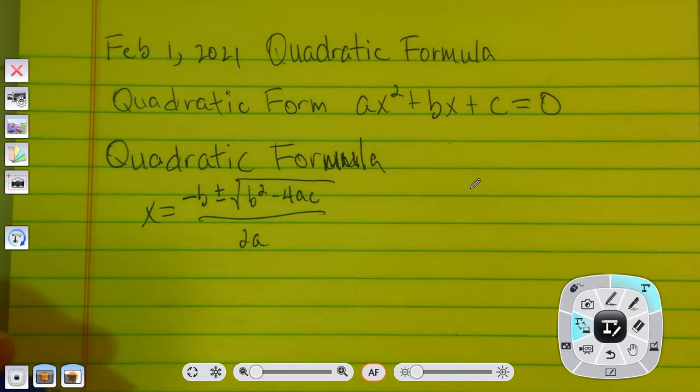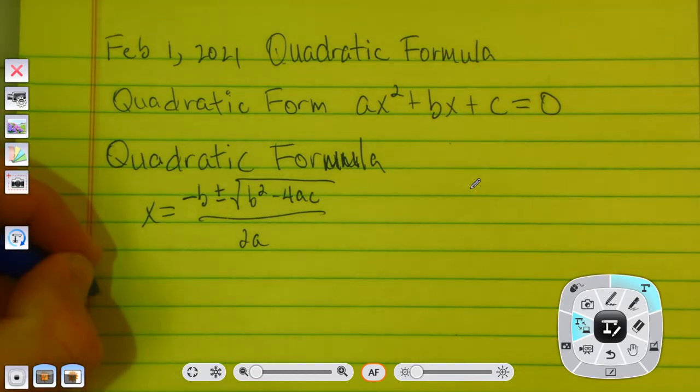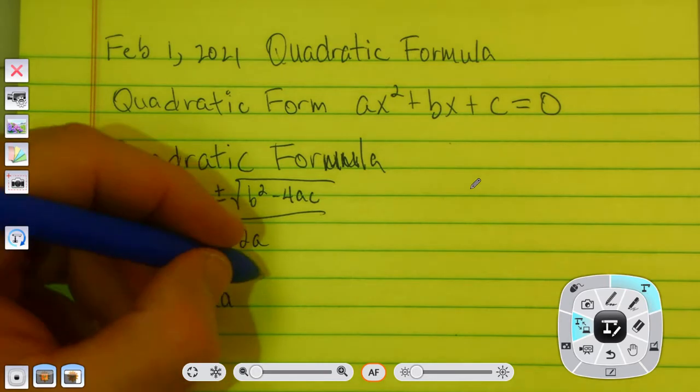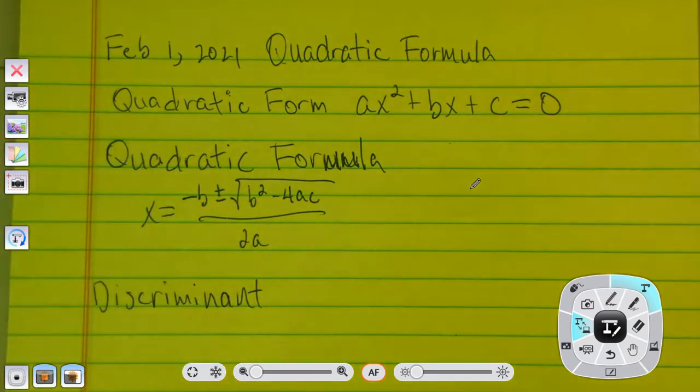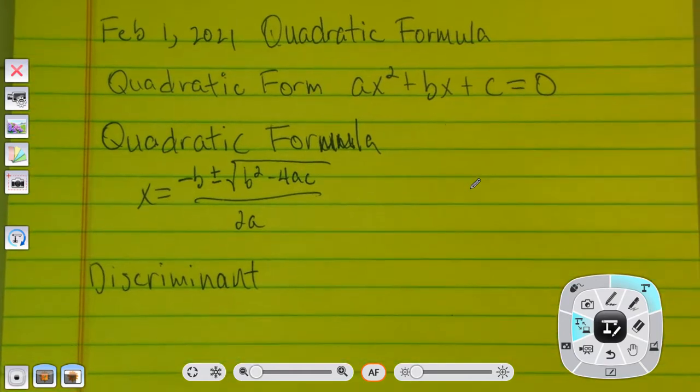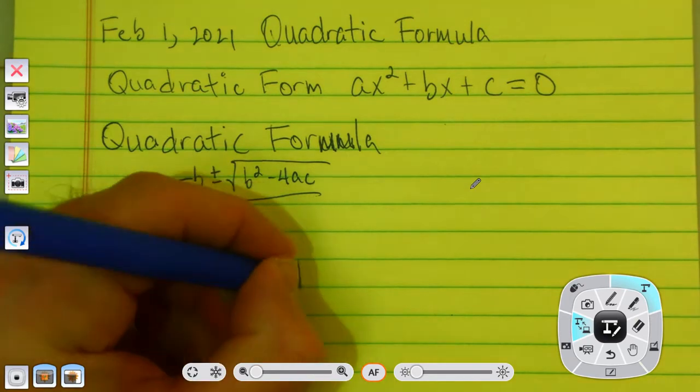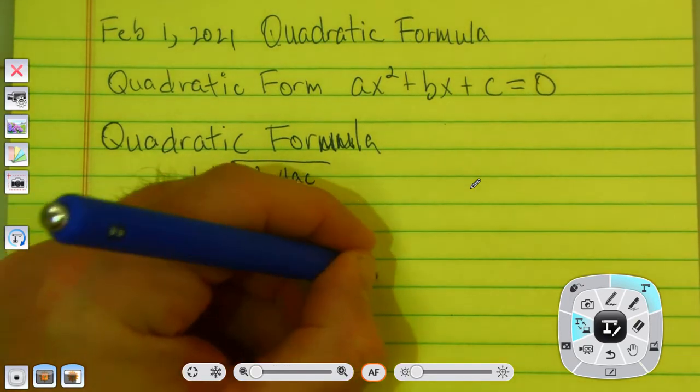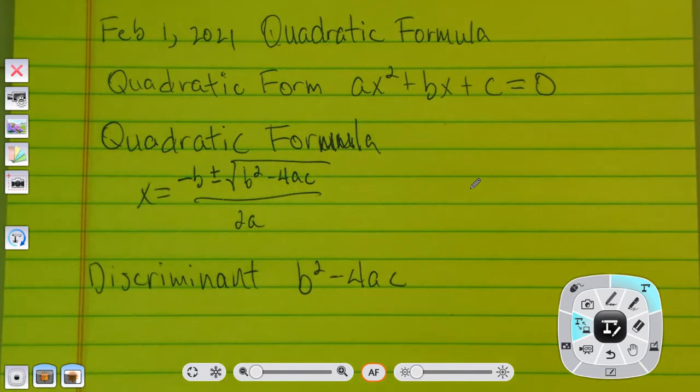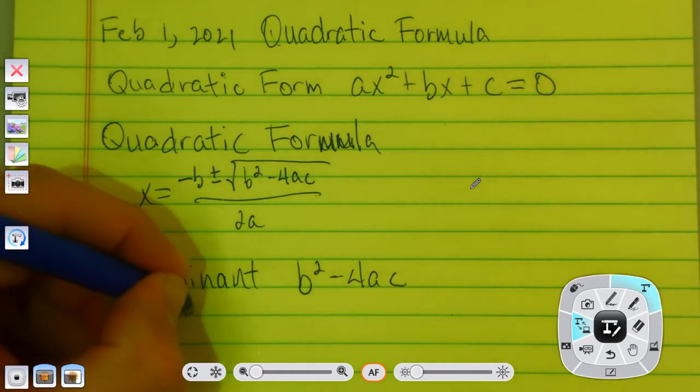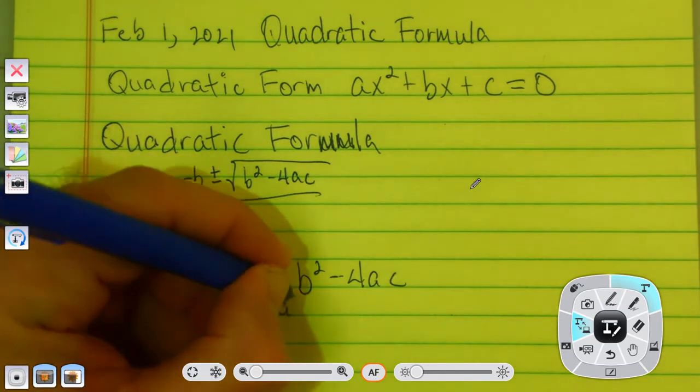The other thing I want you to pay close attention to is something that we're going to call the discriminant. Now, the discriminant is the part that falls underneath the radical sign. It's b squared minus 4ac.